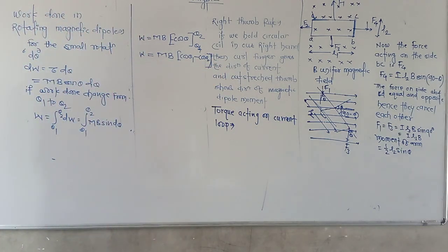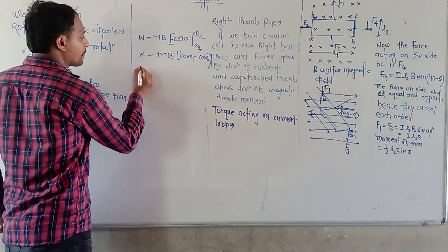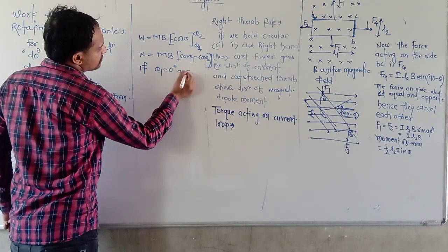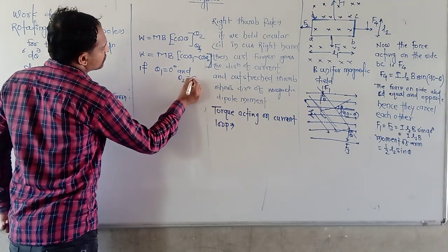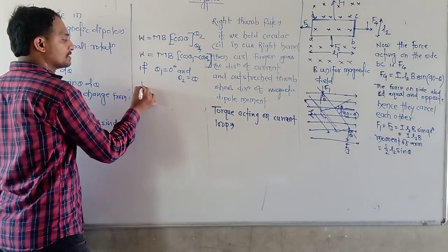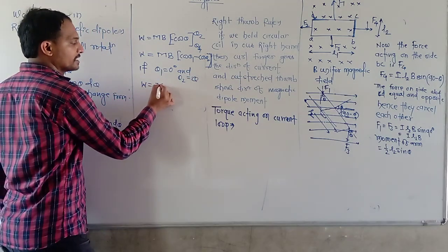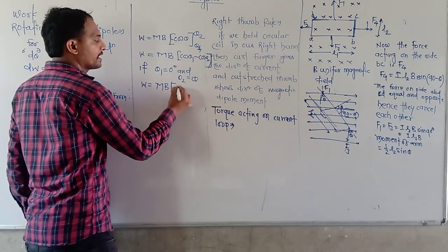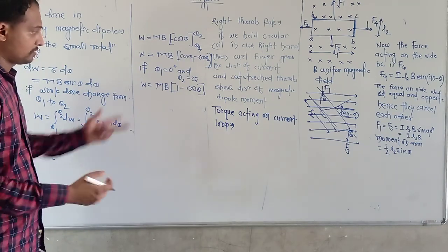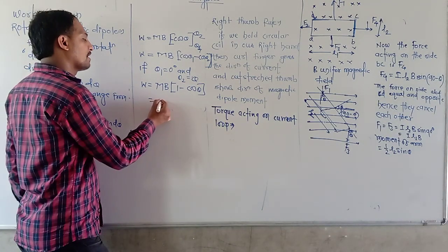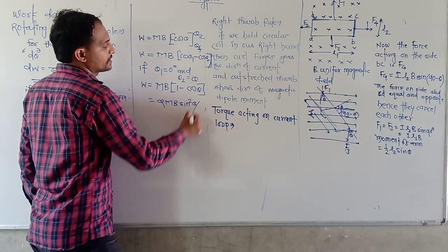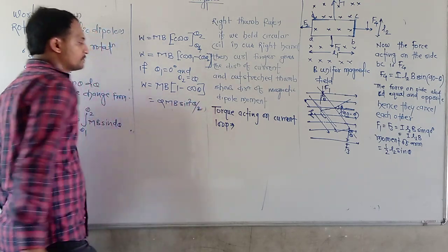We can consider a special case where θ1 is equal to 0° and θ2 is equal to θ. Then the work done is MB(1 − cos θ), which can also be written as 2MB sin²(θ/2).